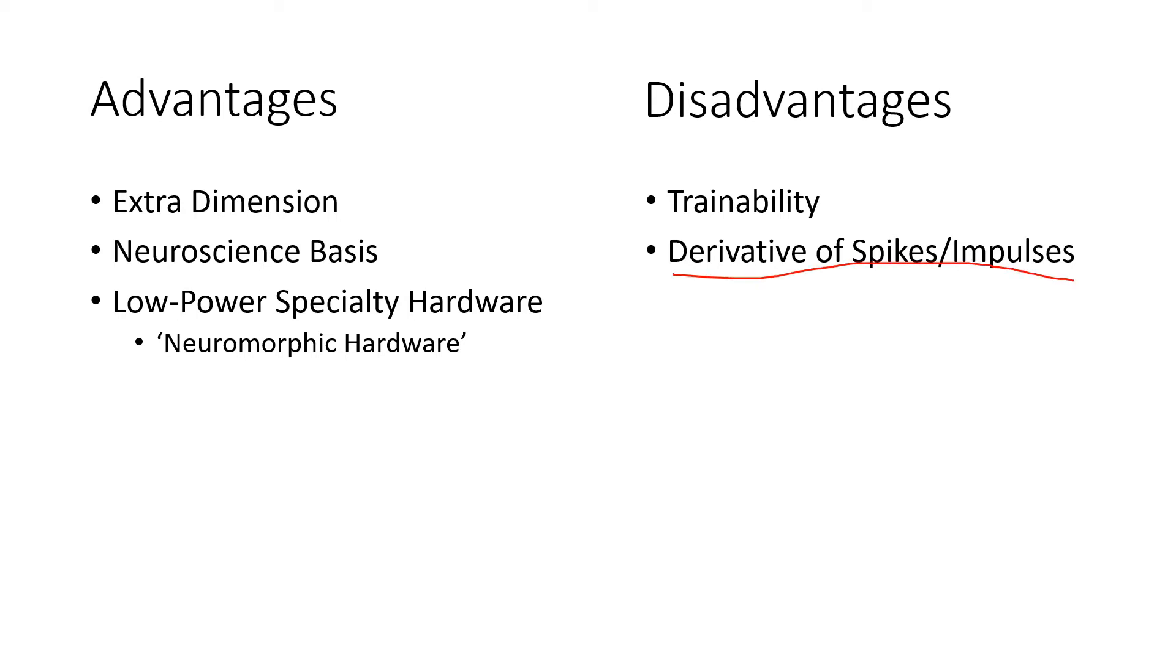And the biggest problem there is the derivative of spikes and impulses. This is a big problem because if you have spikes as impulses, basically as binary, where it's zero and then you have that, you can't derive an impulse because it's instantaneous. And if you want to do something like gradient descent, you need a gradient. You need to be able to take that derivative.